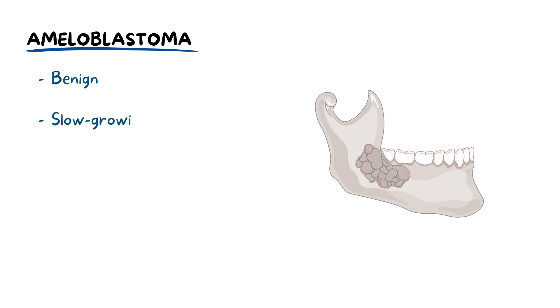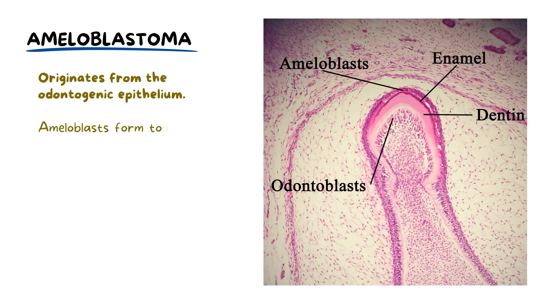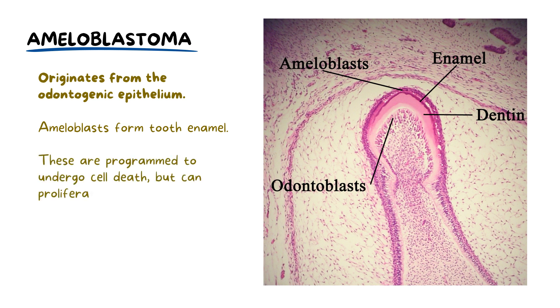Ameloblastoma is a benign, slow-growing, locally invasive tumour primarily developing in the mandible's bone structure. Ameloblastoma originates from the odontogenic epithelium, specifically the ameloblasts, which are responsible for forming the tooth enamel. Typically after enamel development, these cells undergo programmed cell death. However, in ameloblastoma, they abnormally proliferate.